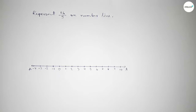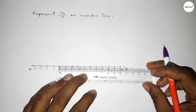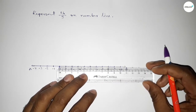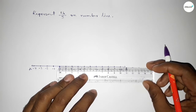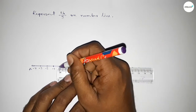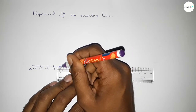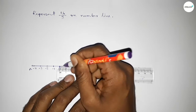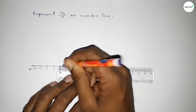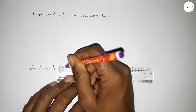Now we have to divide the distance between any two numbers into five parts, so the length of each part equals 0.2 units. Dividing the distance between 0 to 1: the first part is 0.2, the second is 0.4, the third is 0.6, and the fourth is 0.8.